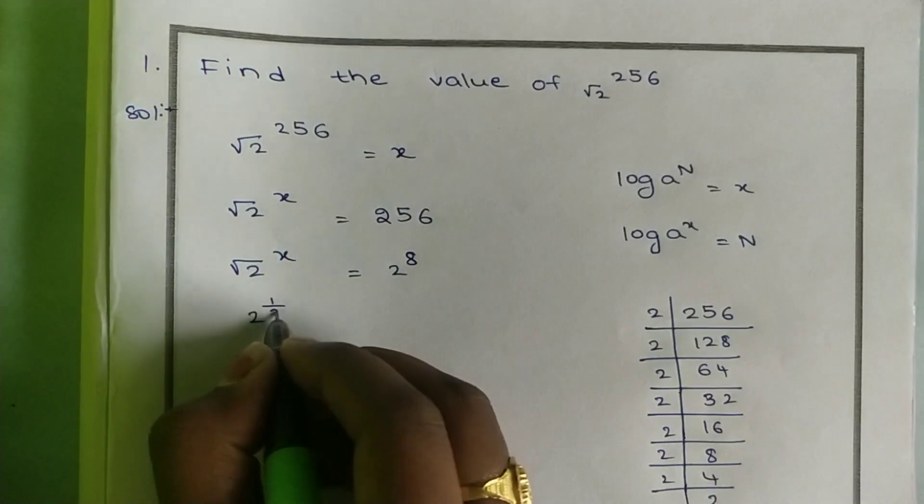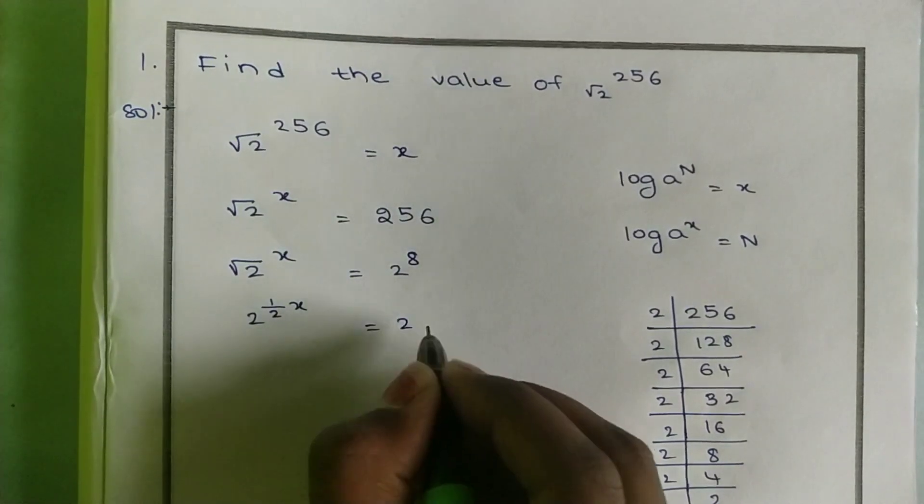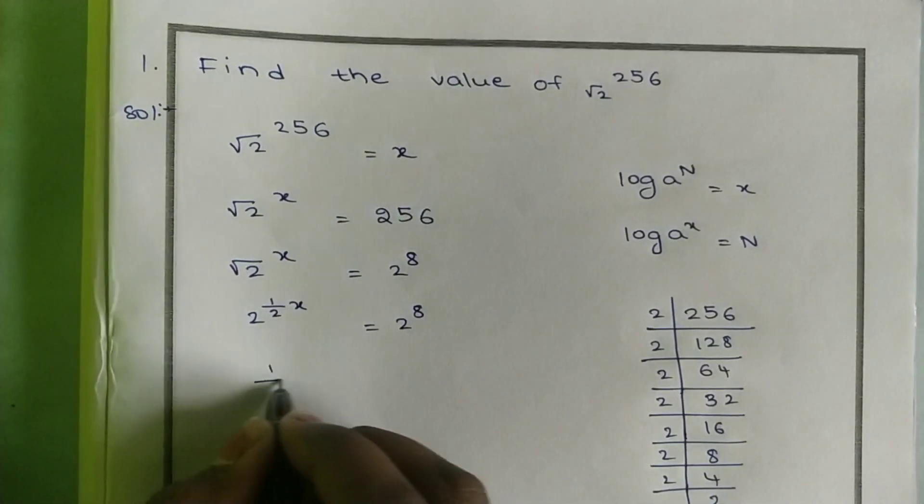Root can be written as one half, so 2 to the power of half x equals 2 to the power 8.